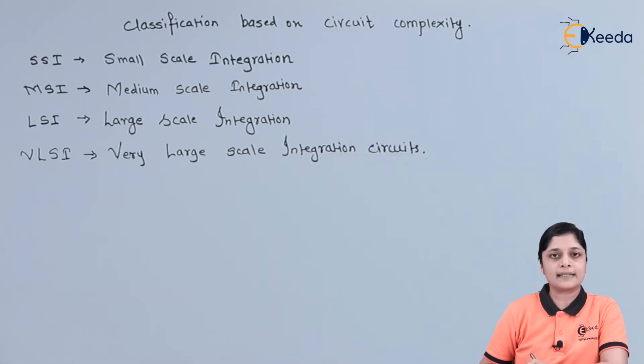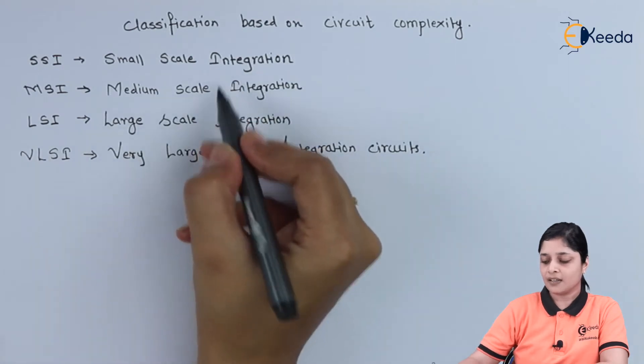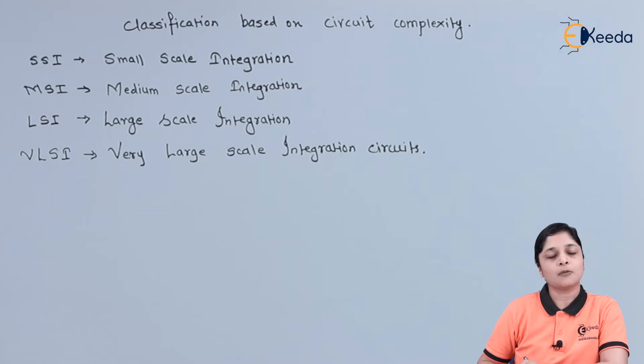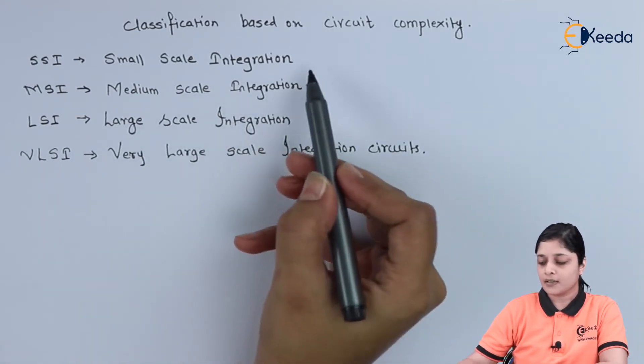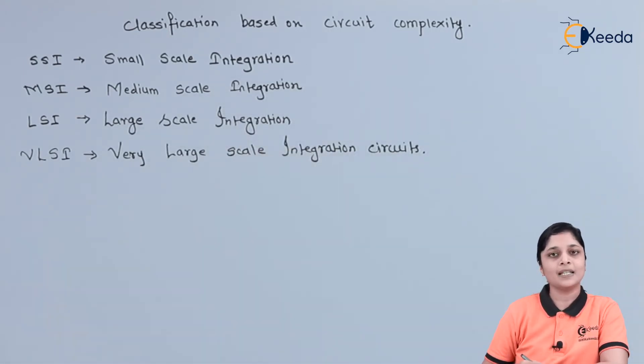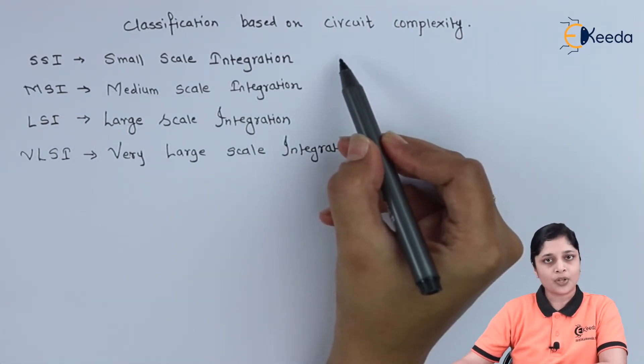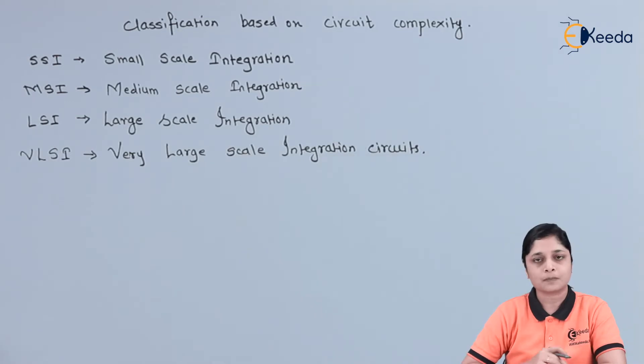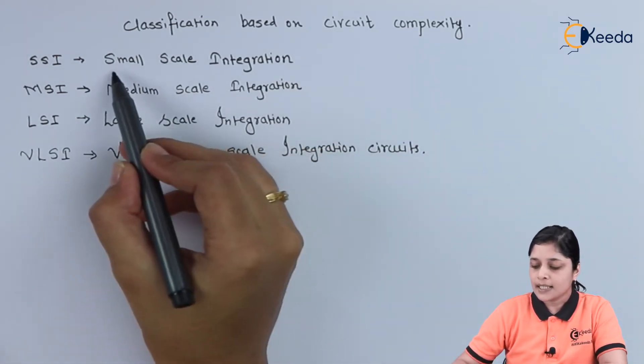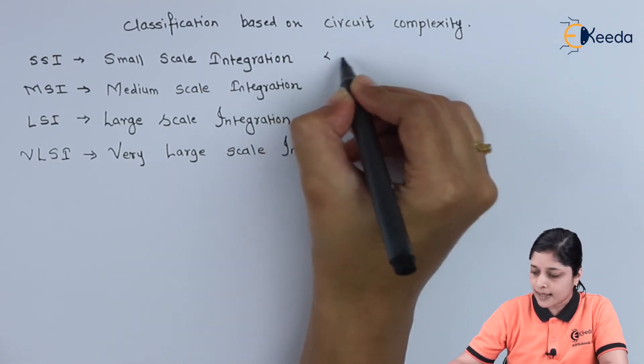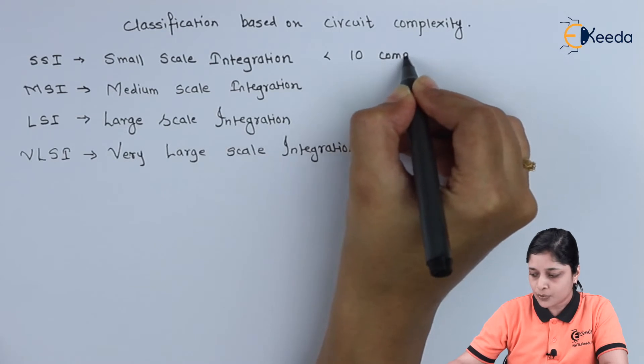Now depending on the devices used, they are classified as four types. We are going to see the components used under all these technologies. Basically, we have to use diodes, transistors, and resistors to design that technology. So in Small Scale Integration, there are less than 10 components.